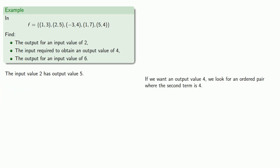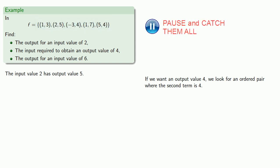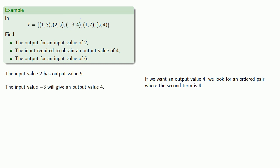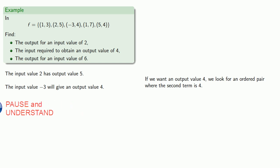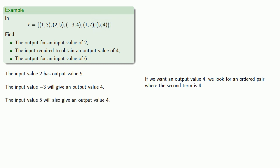What if we want to get an output value of 4? We look for an ordered pair where the second term is 4. We find the pair (negative 3, 4), so the input value of negative 3 gives an output value of 4. But there's more — we have a second ordered pair with an output value of 4: (5, 4). So the input value of 5 will also give an output value of 4.